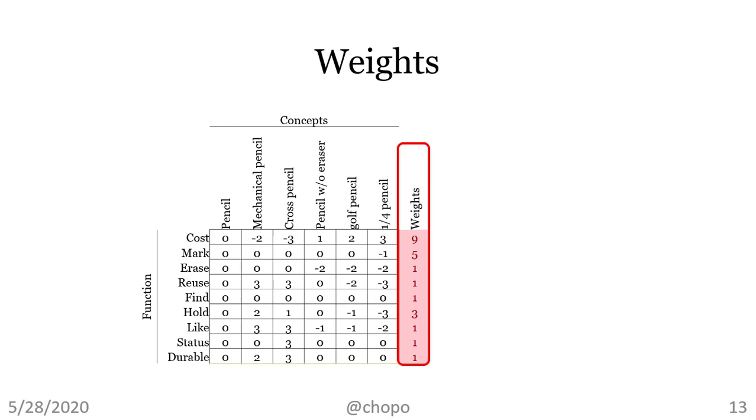So, hold on. To solve the problem, we need to bring weights. Let's change the picture. Let me give cost a score of nine. Mark will have a score of five because it's the primary function. And maybe hold a score of three as we want to emphasize that. The rest will just leave it as ones.